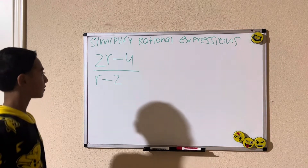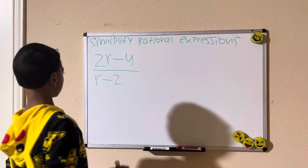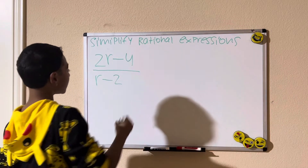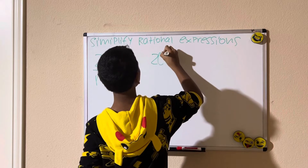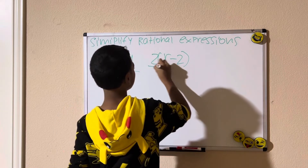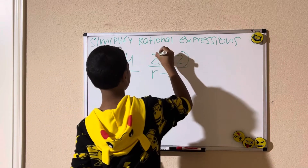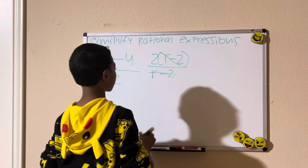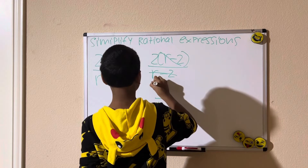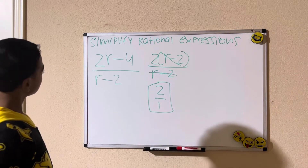Alright, let's see. 2r minus 4 is the same thing as 2 times (r minus 2), divided by (r minus 2). Look at that — the (r minus 2)s cancel out, so we're just left with 2 divided by 1. That is our solution.